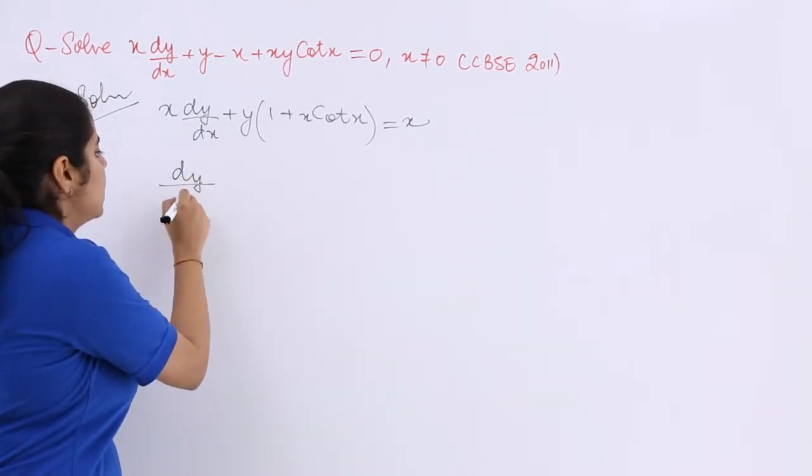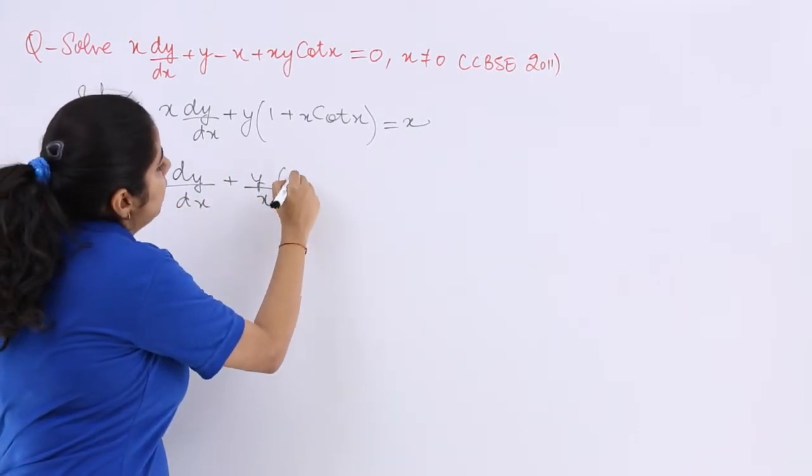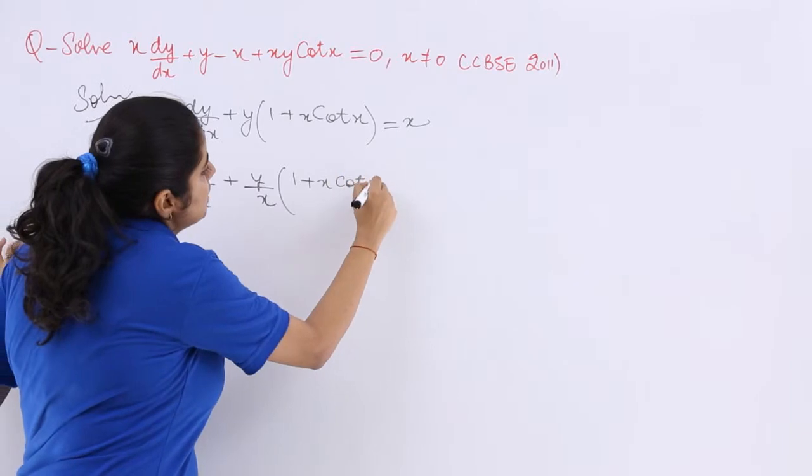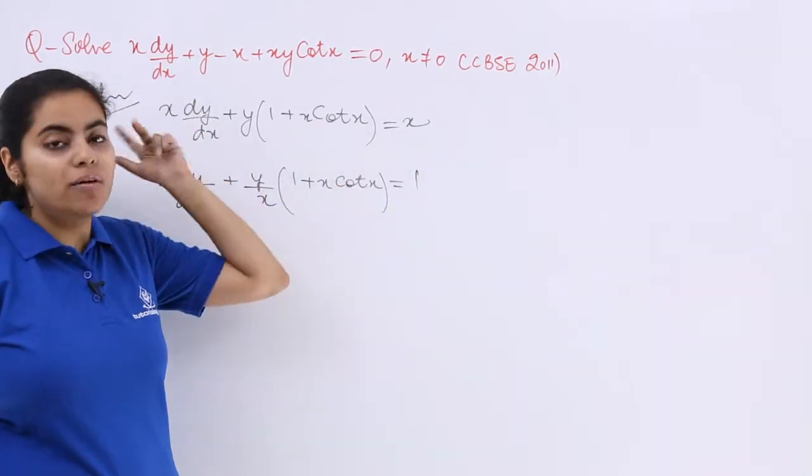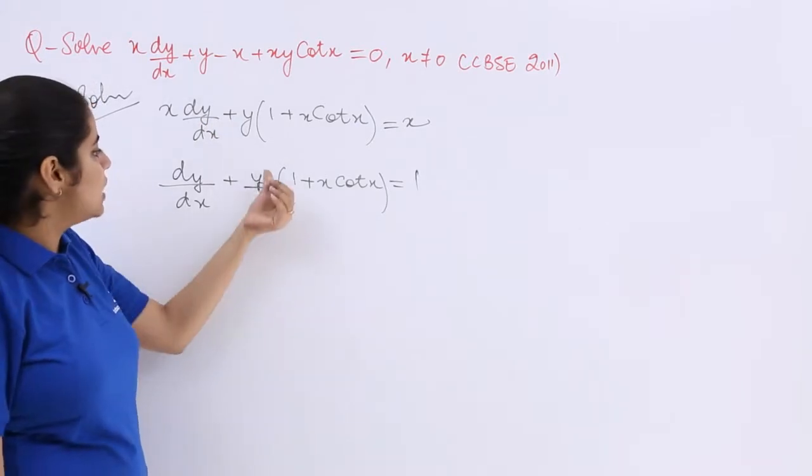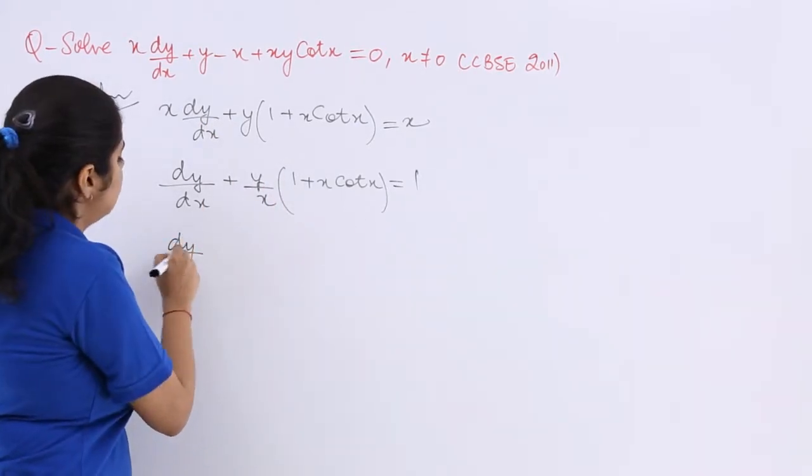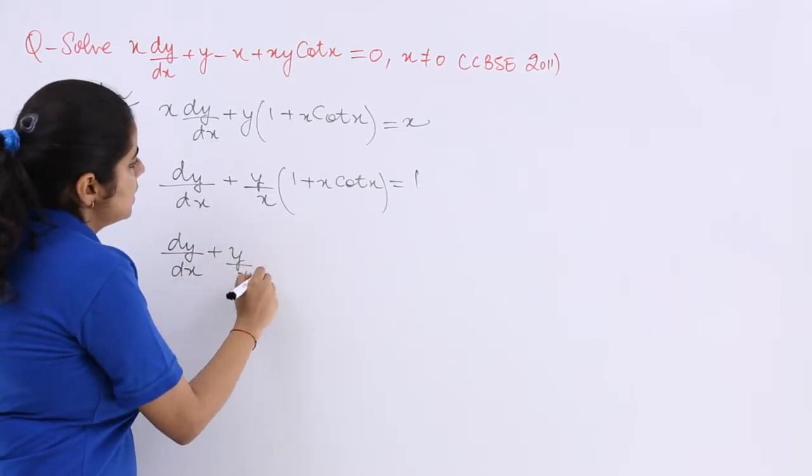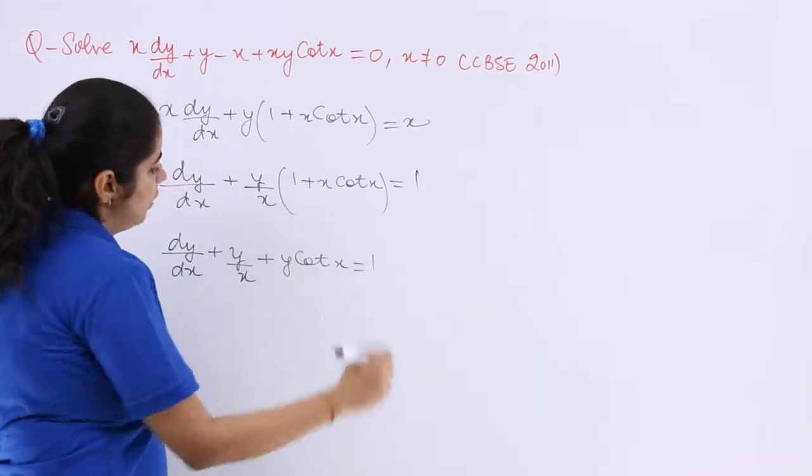So it is dy/dx + y upon x, then it is 1 + x cot x, is equal to 1, because I have to get rid of this x. Now see, y upon x and everything is there. Let's open this bracket. So dy/dx + y/x + y cot x = 1.